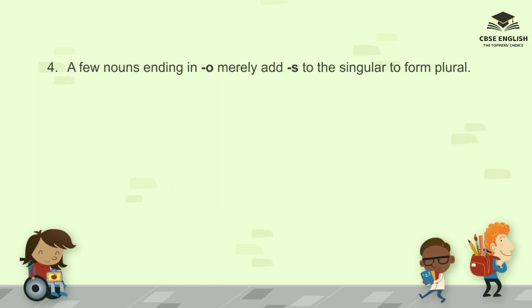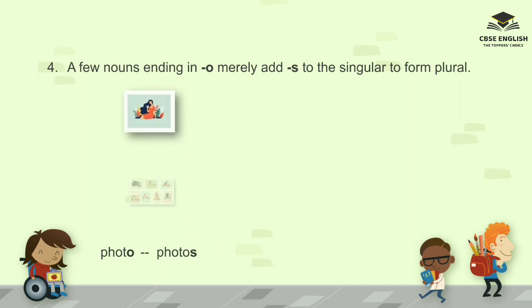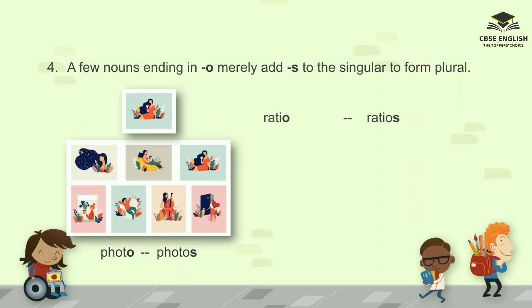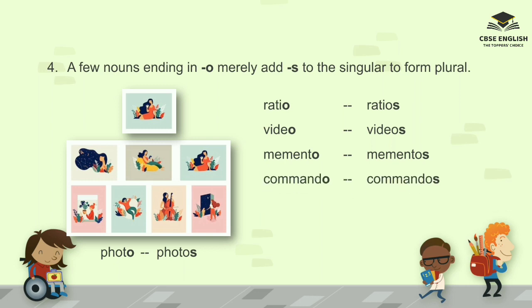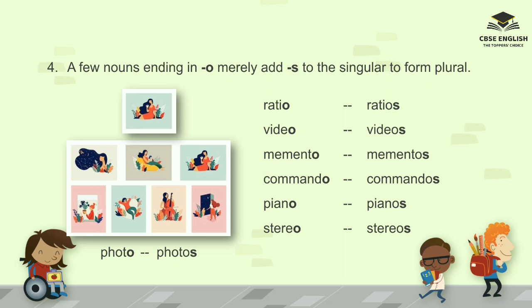A few nouns ending in O merely add S to the singular to form the plural. For example: photo, photos; ratio, ratios; video, videos; memento, mementos; commando, commandos; piano, pianos; stereo, stereos; logo, logos.